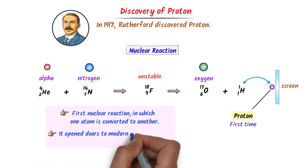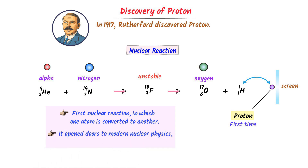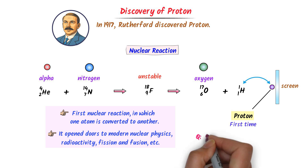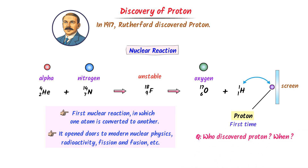This discovery opened doors to modern nuclear physics, radioactivity, fission, and fusion. Who discovered the proton and when? The answer is Rutherford — he discovered the proton in 1917. Remember, many students say Goldstein discovered the proton, but that is totally wrong. Goldstein discovered canal rays, not the proton. Hence, this was all about the discovery of the proton.